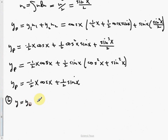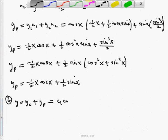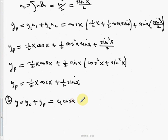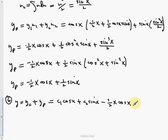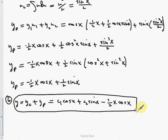Step six: the general solution is y = y_c + y_p = c₁·cos x + c₂·sin x – ½x·cos x + ½·sin x. Note that the +½·sin x term is written separately from y_c.